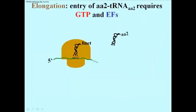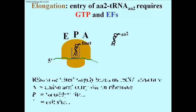Here is the first step of elongation. As you might expect, the second amino acid that is to be put into this newly growing chain has to be attached to its tRNA. Here we see amino acid 2 on its tRNA, and adding this to the complex required GTP as well as elongation factors.